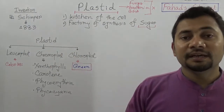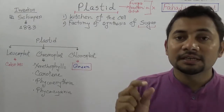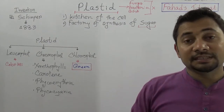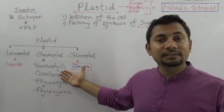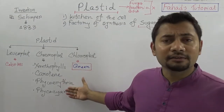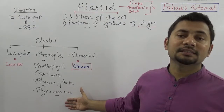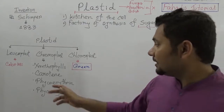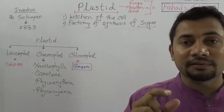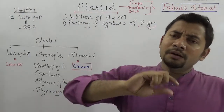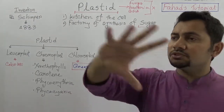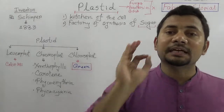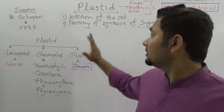Chromoplast is a colorful plastid because it contains color pigments. These pigments include xanthophyll, carotenes, phycoerythrines, and phycocyanines. Xanthophyll is responsible for yellow coloring and carotene for orange-red. The huge variety of colors seen in the plant kingdom is due to chromoplasts.